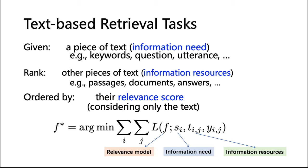Formally, given a piece of text — such as keywords, questions, or utterances — the search system aims to rank text according to the relevance score. As we can see in the formula, given an information need Si and its corresponding document Tij and the label, we aim to minimize the predefined loss function to learn the relevance model F.